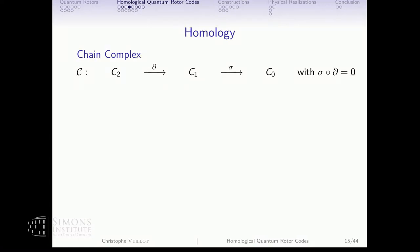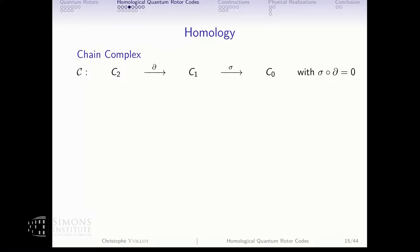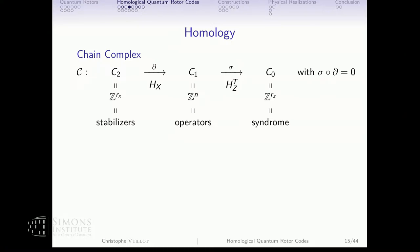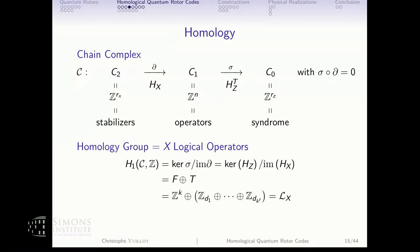Code states can be written as sums over cosets of the kernel of H_Z quotiented by the image. In homology, you have chain complexes—groups with maps between them such that composing the map twice gives zero. The space of stabilizers generated by H_X gives operators, and you compute syndromes with H_Z. The condition that stabilizers commute is the same as requiring this to be a chain complex: H_Z · H_X = 0. Computing the homology of the chain complex is basically computing the logical operators.